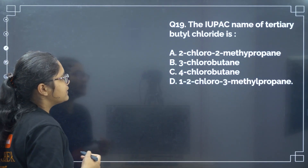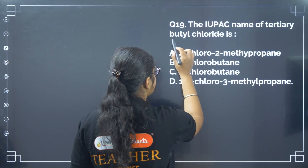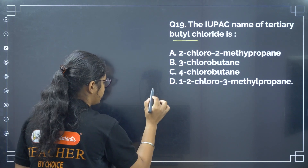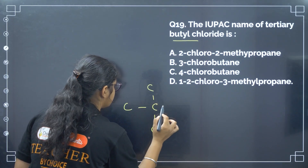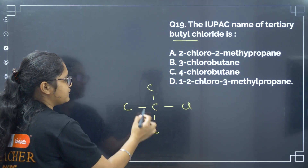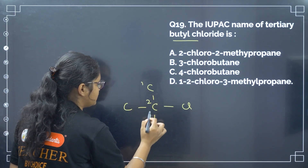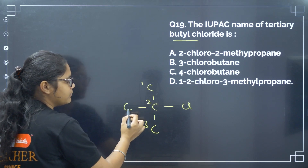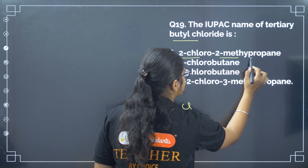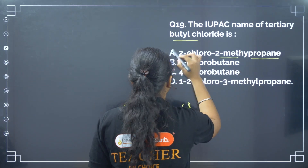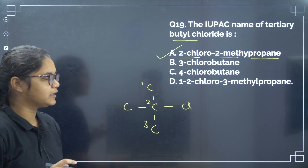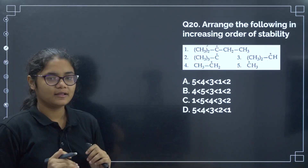Next: the IUPAC name of tertiary butyl chloride. Writing the IUPAC name: the longest chain is propane with chloro at C2 and methyl at C2, giving 2-chloro-2-methylpropane, following alphabetical order. Correct answer is option number A.